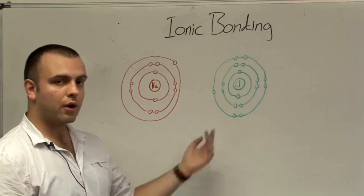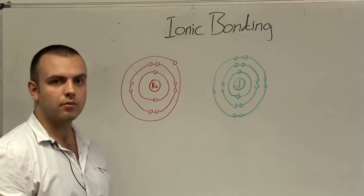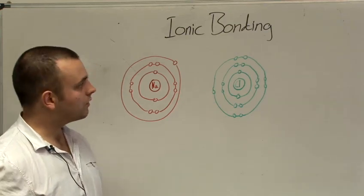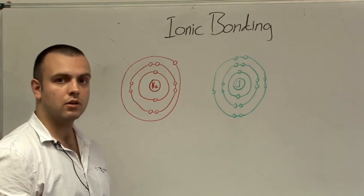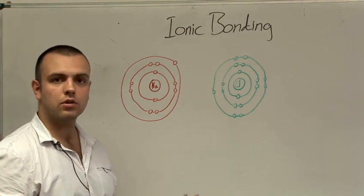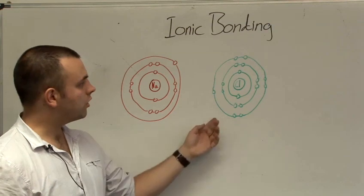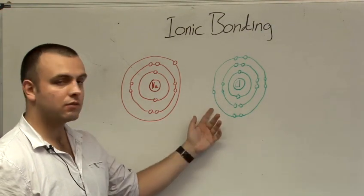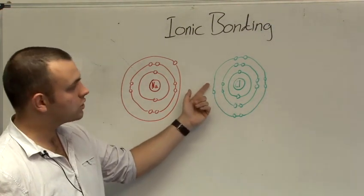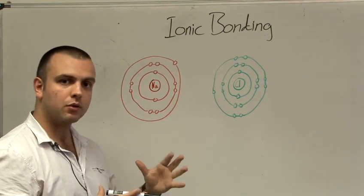Non-metals like chlorine however are on the right hand side of the periodic table. This means that the easiest way for them to gain a full outer electron shell is to gain one, two or three electrons. Chlorine for example has 17 protons and 17 electrons. If it was to gain just one more electron it would have a stable full outer shell.